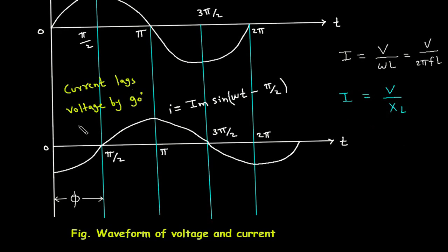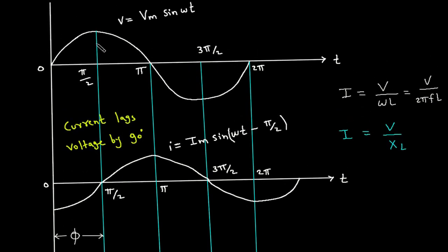The phase difference is exactly 90 degrees, so current lags voltage by 90 degrees. The phase difference between voltage and current is 90 degrees, and we can see that current is lagging. Also, the amplitude of voltage is greater than the amplitude of current.